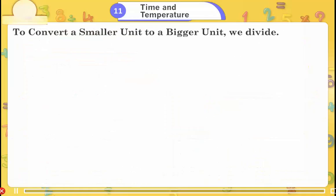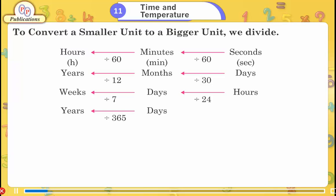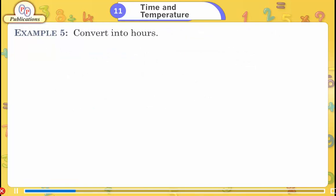To convert a smaller unit to a bigger unit, we divide. Hours divided by 60 gives minutes; minutes divided by 60 gives seconds. Years divided by 12 gives months; months divided by 30 gives days. Weeks divided by 7 gives days; days divided by 24 gives hours; years divided by 365 gives days.